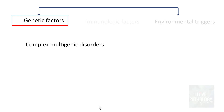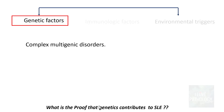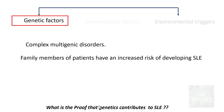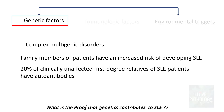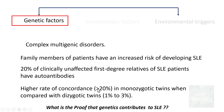Firstly, genetic factors. SLE is a complex polygenic or multigenic disorder. The evidence that genetics contribute includes: family members of patients have an increased risk; 20% of clinically unaffected first-degree relatives of SLE patients also have autoantibodies; and most importantly, there is a higher rate of concordance — more than 20% in monozygotic twins — compared to dizygotic twins, which is around 1 to 3 percent.